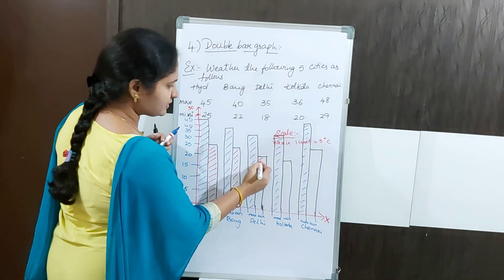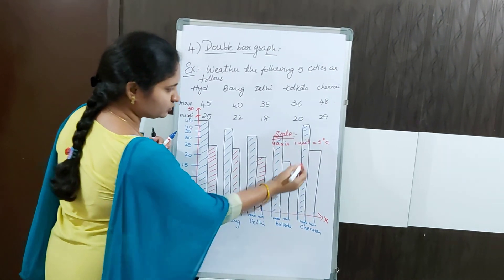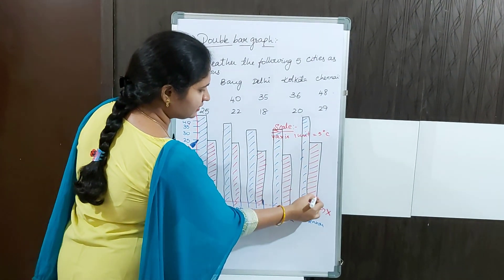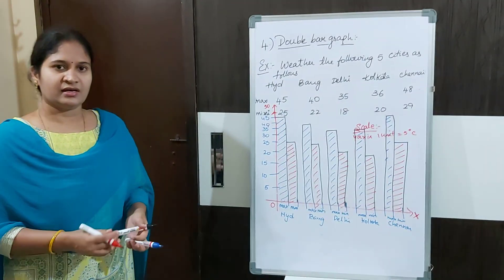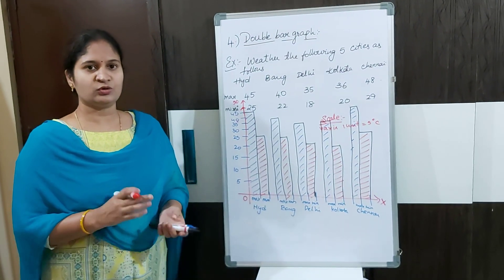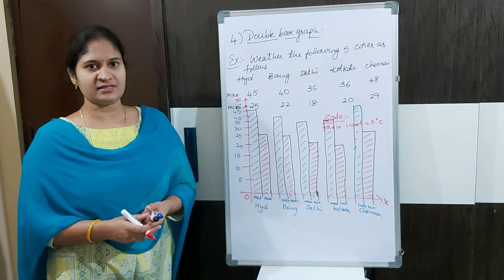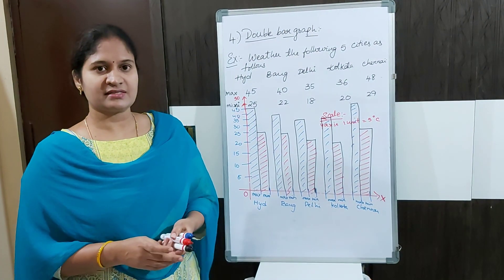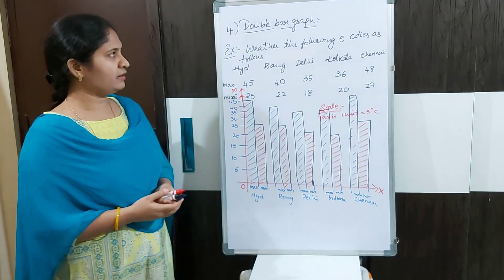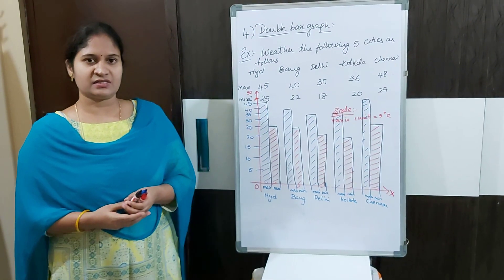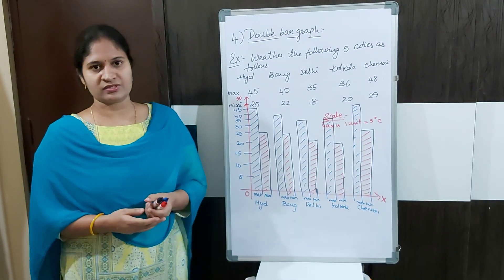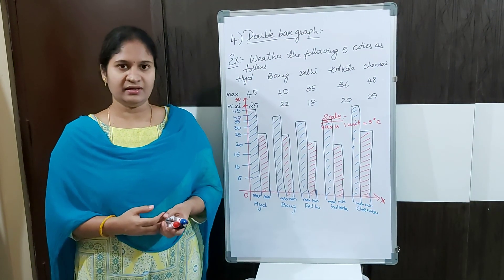This can also be used for other examples, like the marks obtained in term 1 and term 2 in different subjects — you can compare and understand how far you have improved. Double bar graph is used to compare two quantities or two sets of data simultaneously. Now let us go with the next topic for 8th class. Up to now we have covered double bar graph, bar graph, frequency distribution table, and pictograph from previous classes.